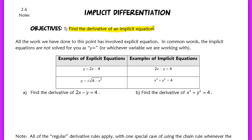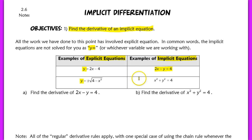All the work we've done to this point has always involved an explicit equation. Implicit equations are not solved for you as y equals. An explicit equation is in terms of y — y is equal to some function of x. In an implicit equation, the equations are equivalent to those on the left, but they are not solved for y. These are called implicit equations when y is not solved for.